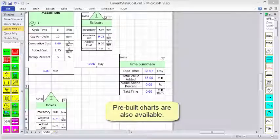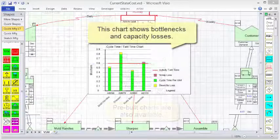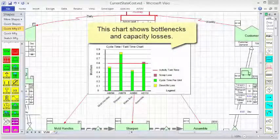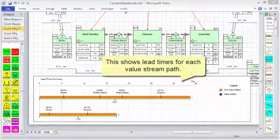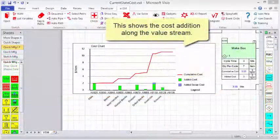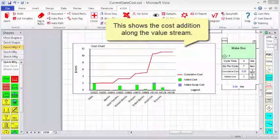Pre-built charts are also available. This chart shows bottlenecks and capacity losses. This shows lead times for each value stream path. This shows the cost addition along the value stream.